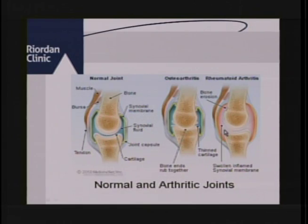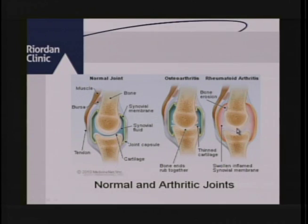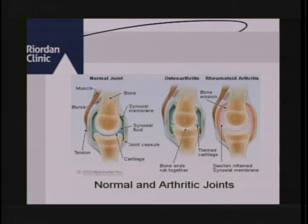This is rheumatoid arthritis. You can see the synovial membrane that surrounds our joints — the immune system starts attacking this membrane. That's where you get the influx of inflammation into the joints, and they start swelling, getting red, hot, and inflamed. Rheumatoid affects multiple joints at the same time.